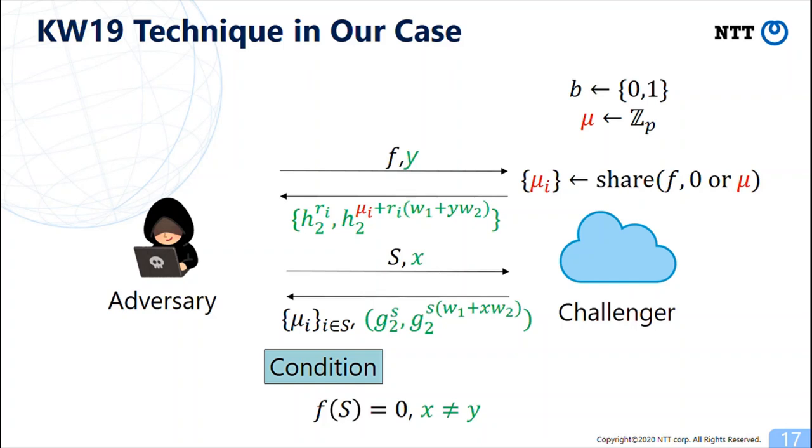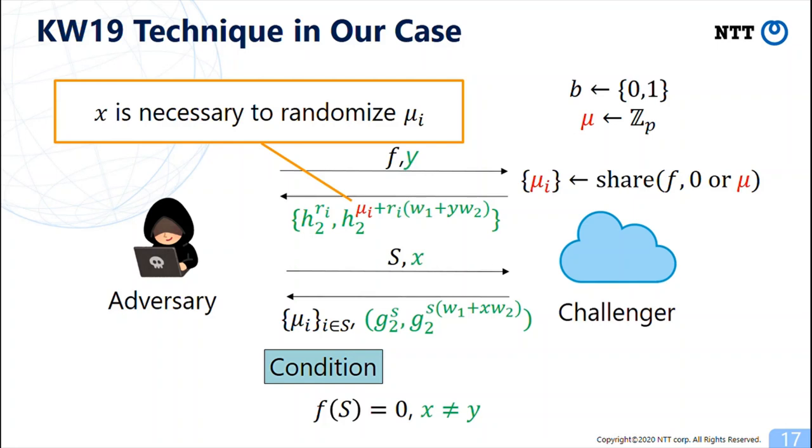The main reason is, to randomize the shares mu_i, the reduction needs to know X. However, these queries are made adaptively, so the reduction may not know X. This is the problem.